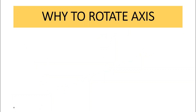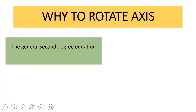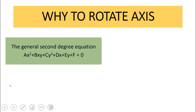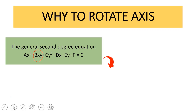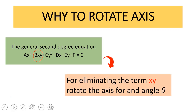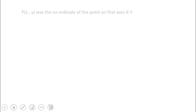Why do we need to rotate the axes? For a curve, the general second-degree equation is Ax² + Bxy + Cy² + Dx + Ey + F = 0. The term Bxy depends on both axes, so we must eliminate it. To eliminate this term, we rotate the entire axes by an angle theta — that is why we apply rotation of axes.